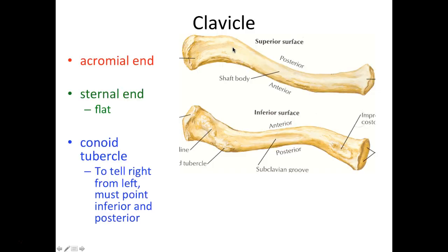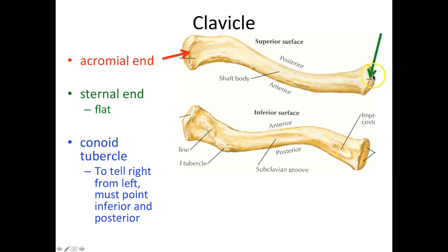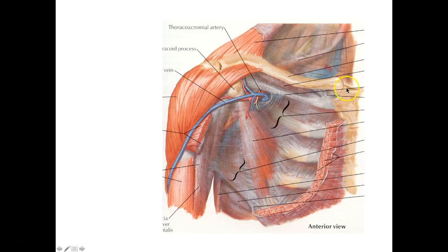Let's start with the clavicle. We have a superior surface and an inferior surface. On these views we're going to see the acromial end, which is more of a flattened type of end. The other end, the sternal end, is also flat because it is going to butt up against your sternum, so it's flat in that sense.